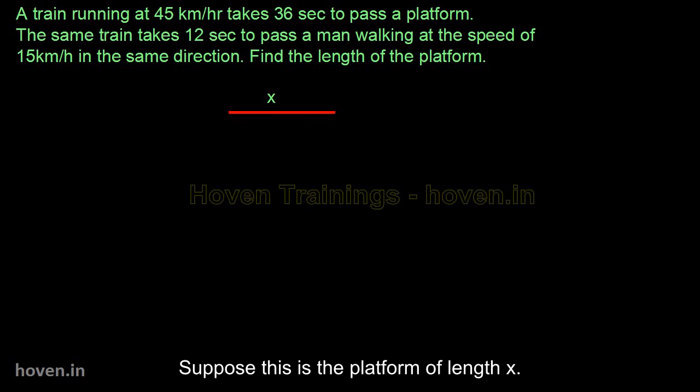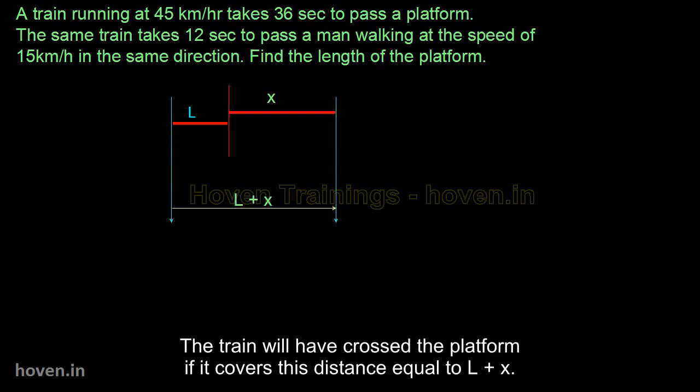Suppose this is the platform of length x. Let this be the train that has just touched the platform. The length of the train be L. The train will have crossed the platform if it covers this distance equal to L plus x.